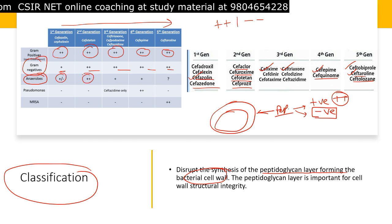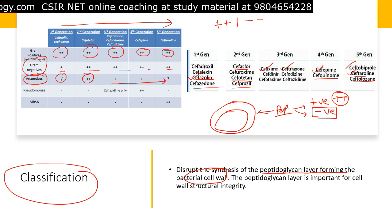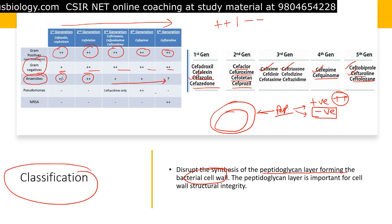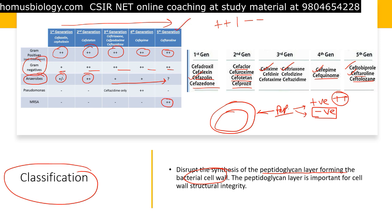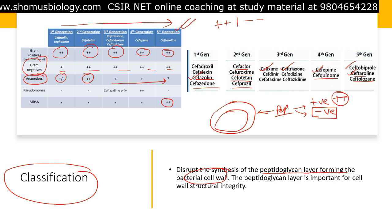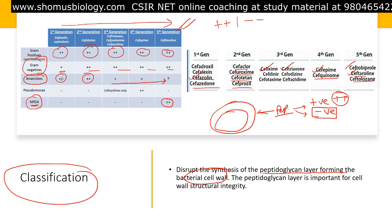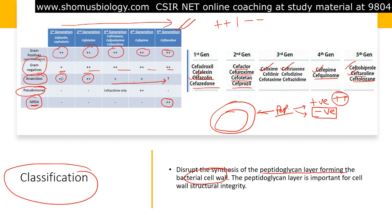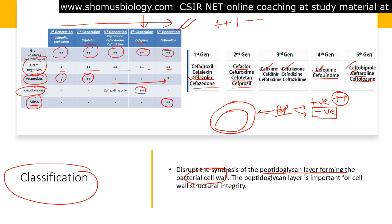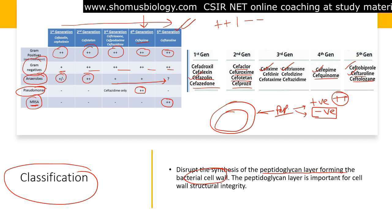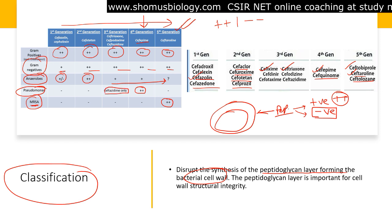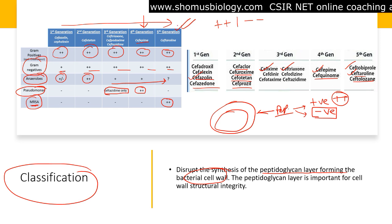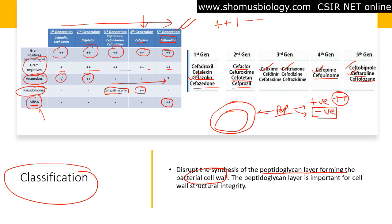Effectiveness against anaerobic bacteria was present in the first generation, maximum in the second, and then gradually reduced. The fifth generation cephalosporins are notably effective against MRSA — multi-drug resistant Staphylococcus aureus. Pseudomonas infections can be treated with fourth generation cefepime and third generation ceftazidime only — no other cephalosporins are effective against Pseudomonas. Ceftaroline is the only fifth-generation cephalosporin effective against MRSA.